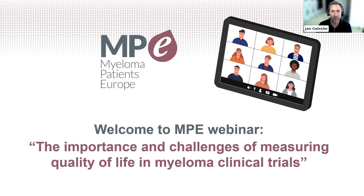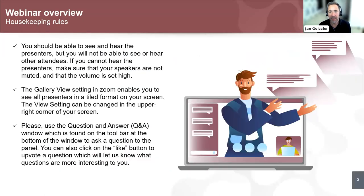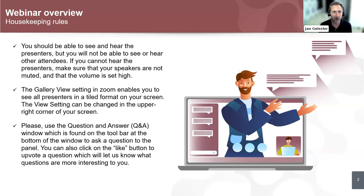We have a distinguished panel today to discuss these issues from different perspectives. Some housekeeping rules: you will see the presenters but will not hear or see other attendees because it's a Zoom webinar. If you cannot hear the presenters, make sure your speakers are not muted and the volume is set high. You can go into the gallery view in the view settings of Zoom on the upper right corner of your screen to see all cameras during the panel.